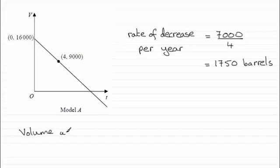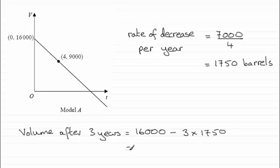And what we've got then is 16,000 that's the initial bit minus three years at 1,750. Work that out and what you end up with is 10,750 and that'll be barrels.